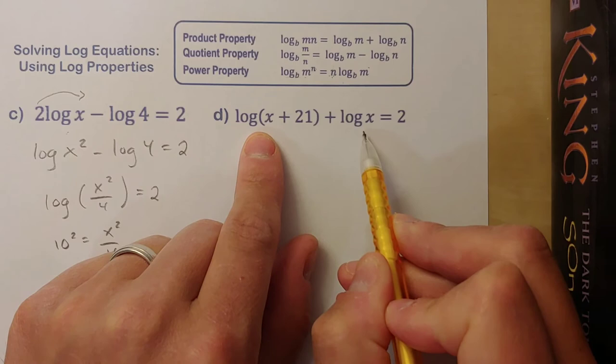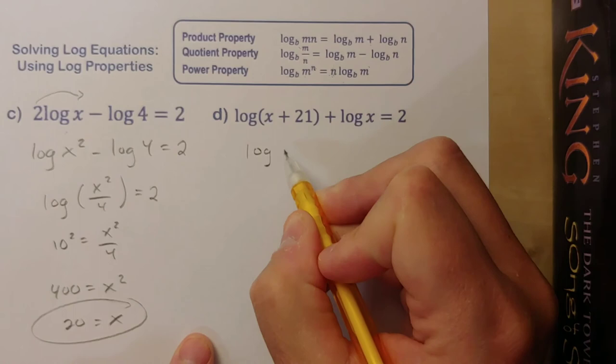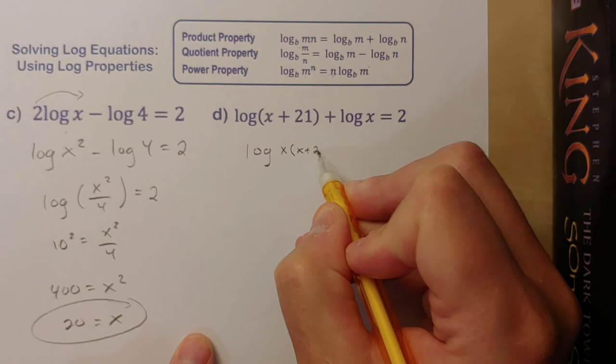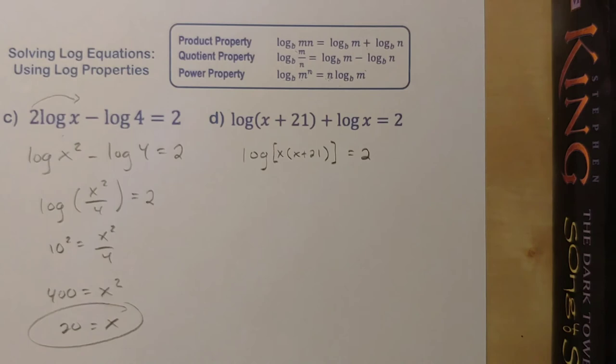Okay, so we have two logs, they have the same base, which is important, which means it looks like we can combine these. They're being added, we can combine these using the product property. Rewriting as a single log, we're going to get log base 10 of, now when we multiply these together we get x times (x+21). This is all in my log function here, base 10, and this will equal 2. Let's rewrite this as an exponential now because I have a single log equaling some value. So 10 to the power of 2.